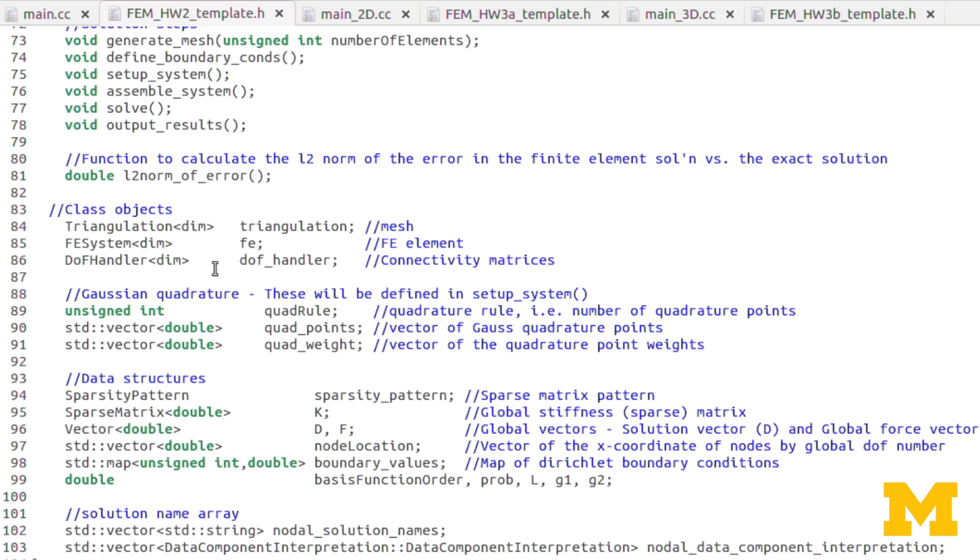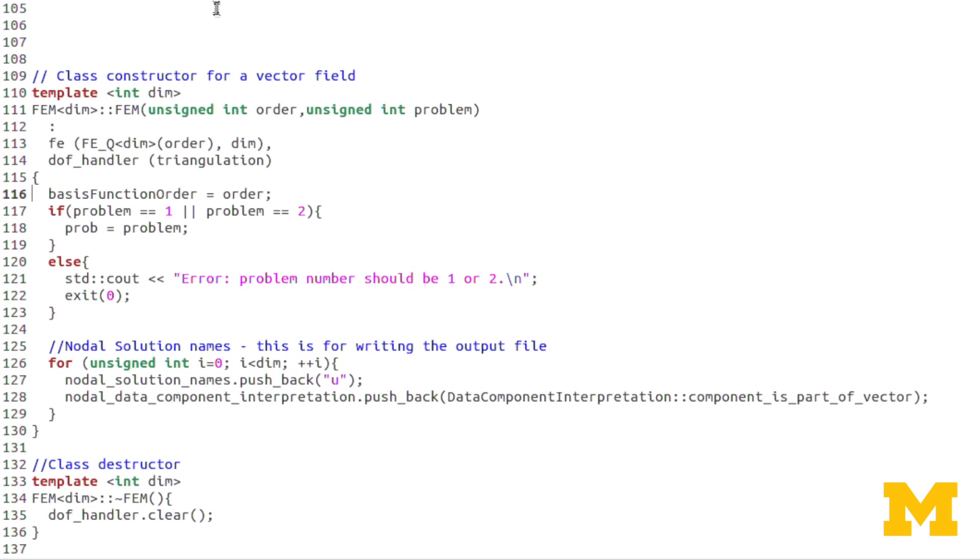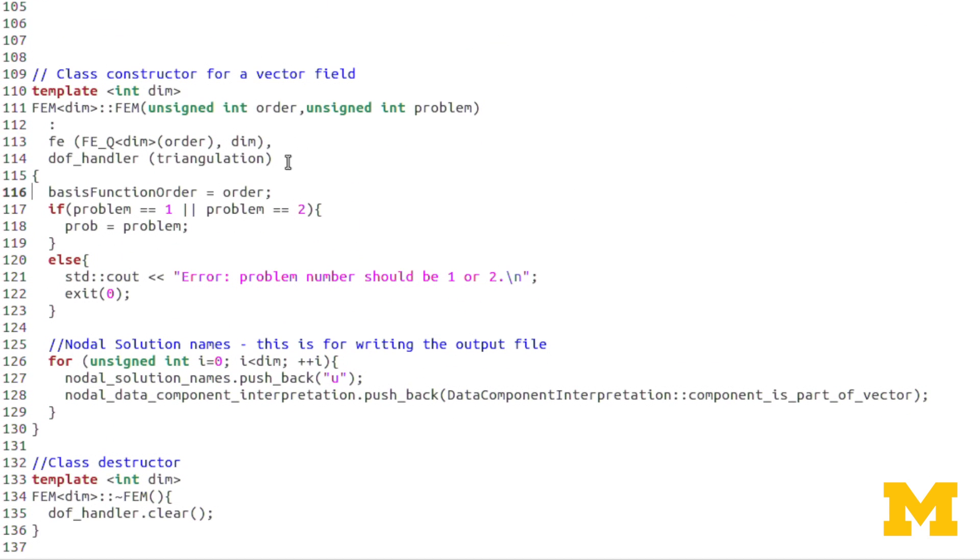When we're declaring objects in the class declaration, we can't call their constructor. But normally, we actually call the constructor when we declare an object, right? So in order to get around that difficulty, we can call the constructor for these class objects within the constructor for the class itself.